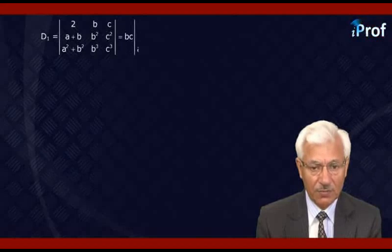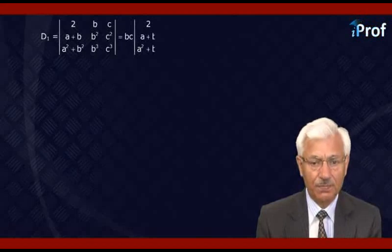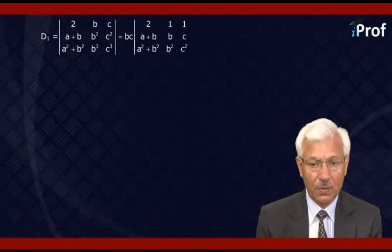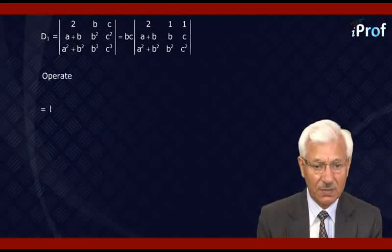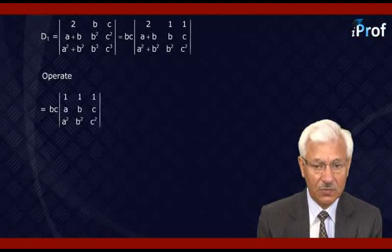Pulling out B and C common from the second and third columns, we get BC times the matrix with first column 2, A+B, A²+B²; second column 1, B, B²; third column 1, C, C². Now operate C1 → C1 - C2. We get BC times the matrix with columns 1, A, A² and 1, B, B² and 1, C, C².